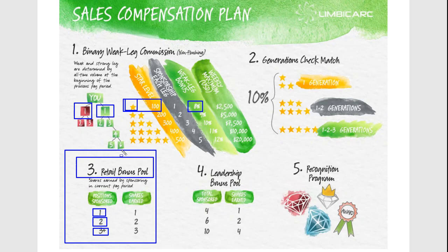Let's say one leg has $1,000 in volume — 10 people there for the week — and the other leg has $500. You're going to get paid on $500, which is 8% of $500. The other $500 carries over to next month — it doesn't flush, it doesn't go away, you'll get to use it next month. As a Star 100, you can earn up to $2,500 per week, which is $10,000 a month.